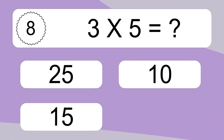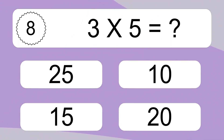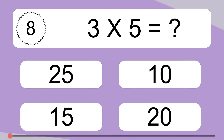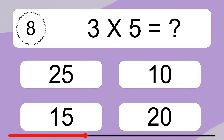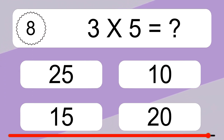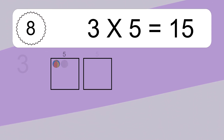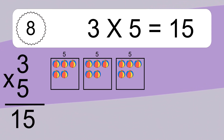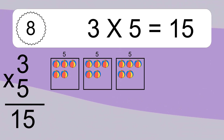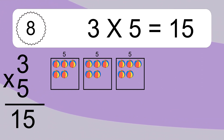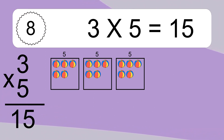3 times 5 equals what? 3 times 5 equals 15. We have 3 boxes, and each box has 5 colorful balls inside. If you count all the balls in all the boxes together, you will have 3 times 5 balls. This equals 15 balls.